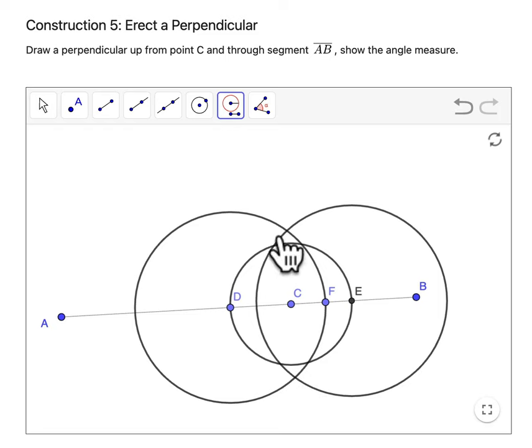And those two circles meet at these points here. And you can then construct the line that is perpendicular to your segment AB.